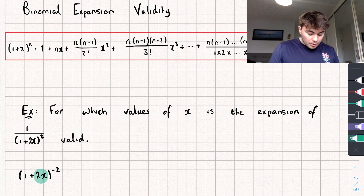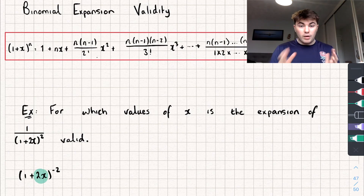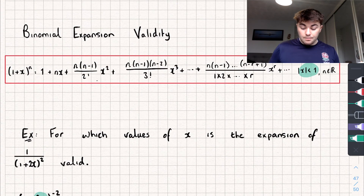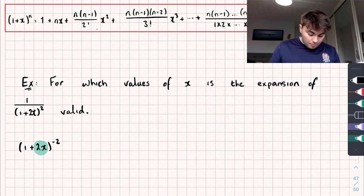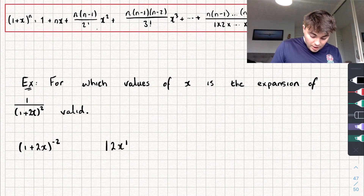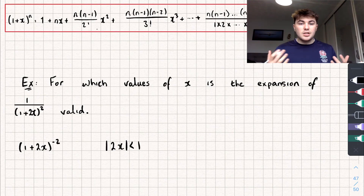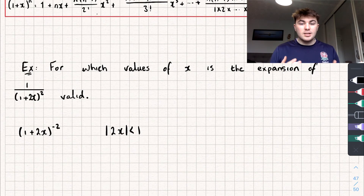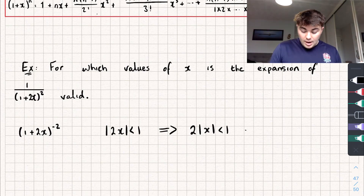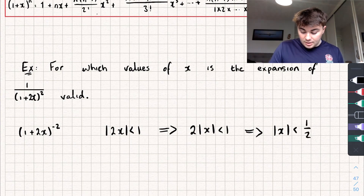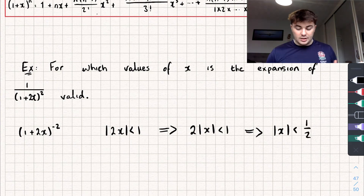The first question asks: for which values of x is the expansion of 1 over (1 + 2x) squared valid? We rewrite it as (1 + 2x) to the power of negative 2. Rather than 1 + x, we've got 1 + 2x, so inside the modulus we write 2x: the absolute value of 2x is strictly less than 1. Since |2x| = 2|x|, we divide both sides by 2, giving us |x| < 1/2.